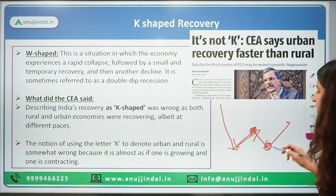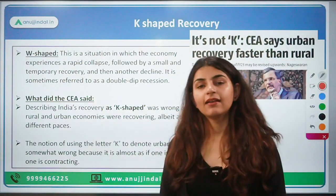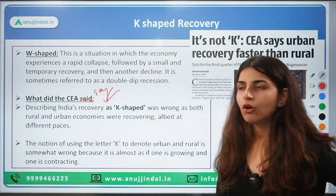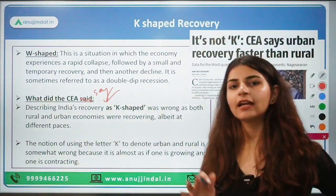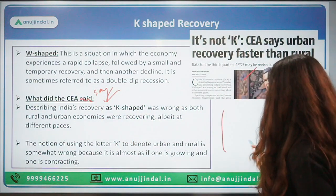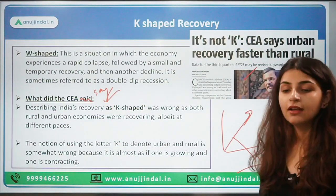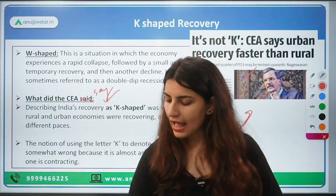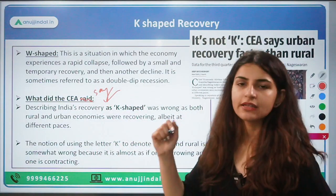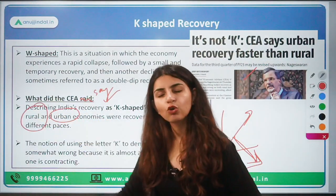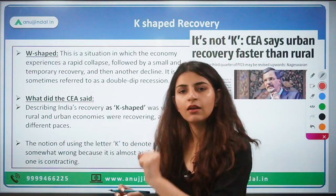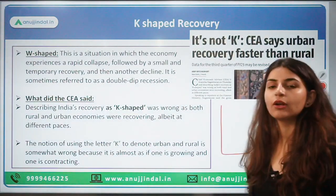Now what did the CEA — Chief Economic Advisor — say? He was in the news and said it is not right to call this a K-shaped recovery curve. Because when you say K-shaped recovery, you are saying one sector is growing while the other is contracting. The Chief Economic Advisor said there is growth in both rural and urban economies, though possibly at different phases.